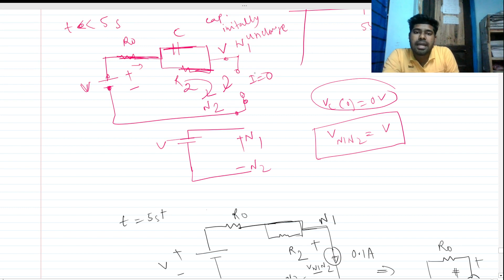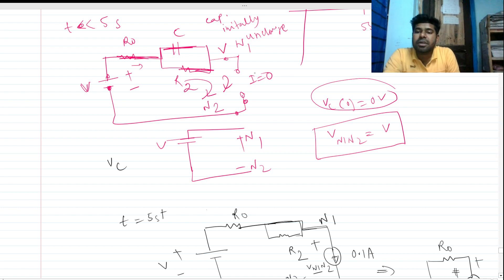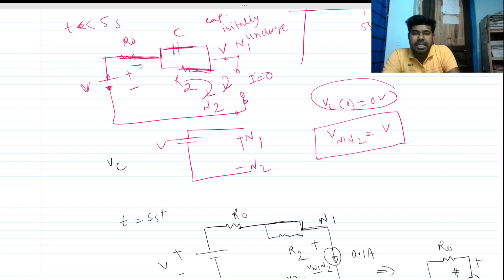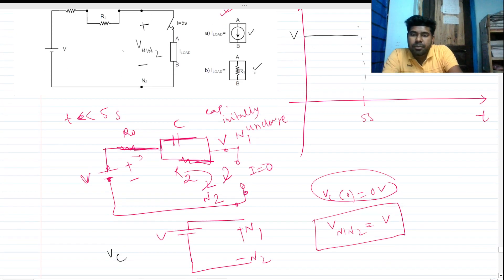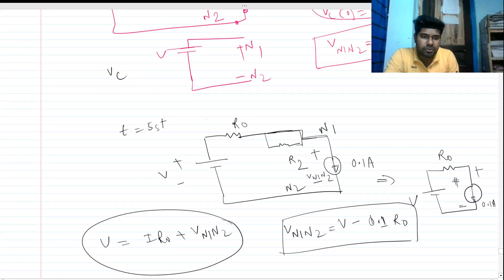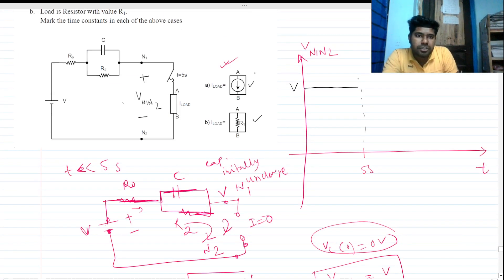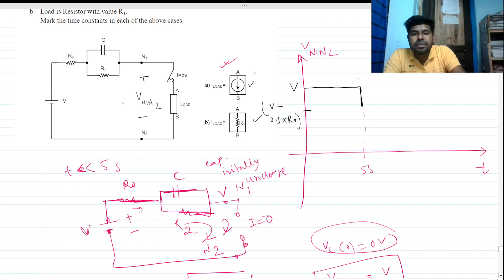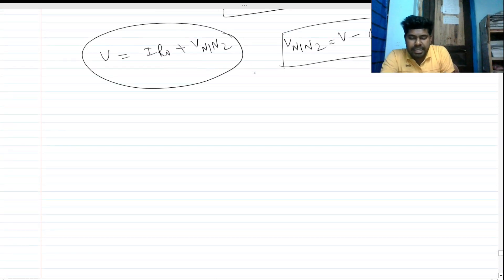The output can change instantly because the capacitor is short-circuited. We know only the capacitor voltage cannot change instantly, but any other element like a resistor or current source — the voltage across it can change instantly. So the voltage becomes lower: V minus 0.1·R0. It drops to this voltage, which is V - 0.1·R0.